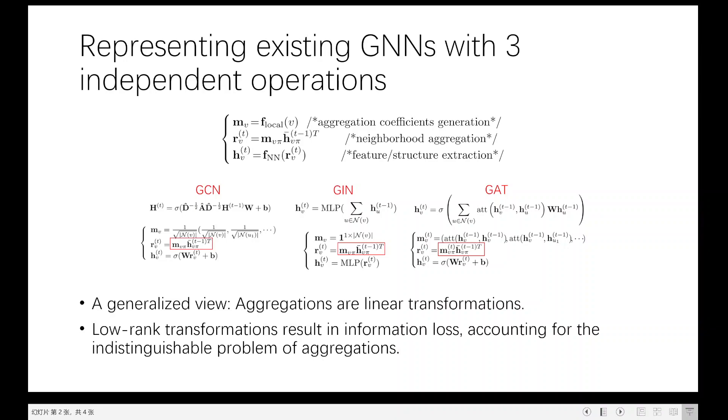Based on this observation, widely used aggregators are low-rank transformations. As a result, leading to information loss. This is more widely known as the indistinguishable problem of aggregations.